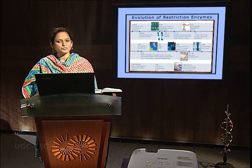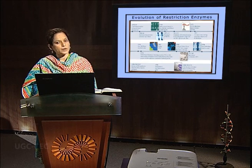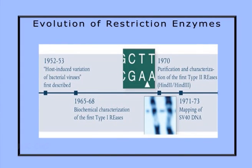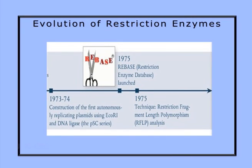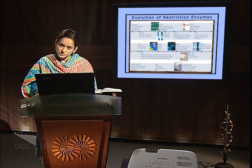Let us see how the evolution of restriction enzymes took place. It was first initiated in 1952-53 where host-induced variation of bacterial viruses was first described. After that, there was the characterization of the first type 1 restriction endonucleases, followed by type 2 restriction endonucleases. In the year 1975, a restriction enzyme database was launched along with the technique restriction fragment length polymorphism analysis, which was also developed.